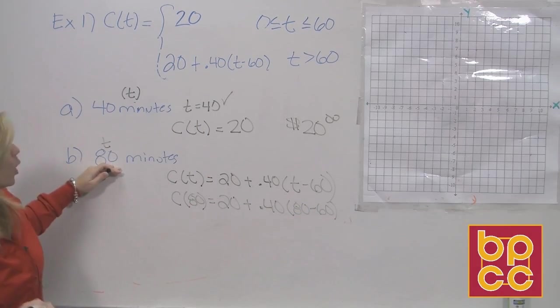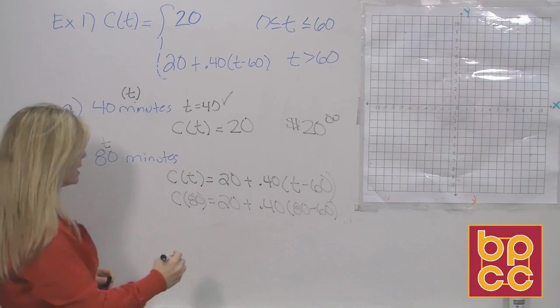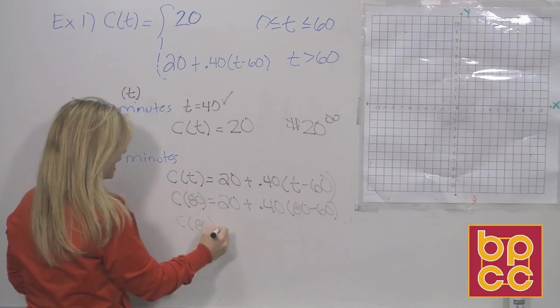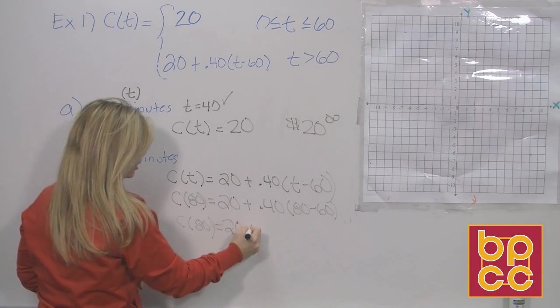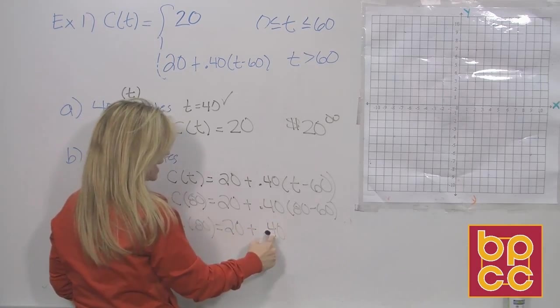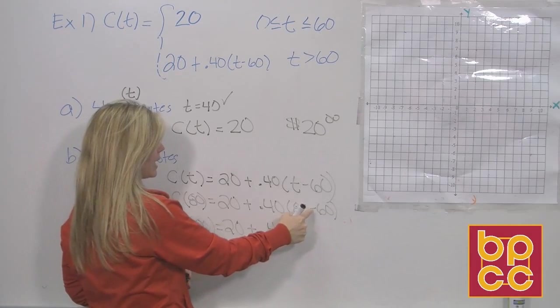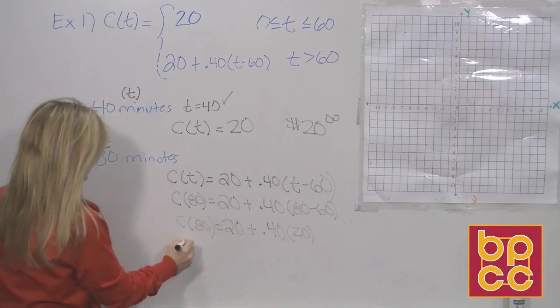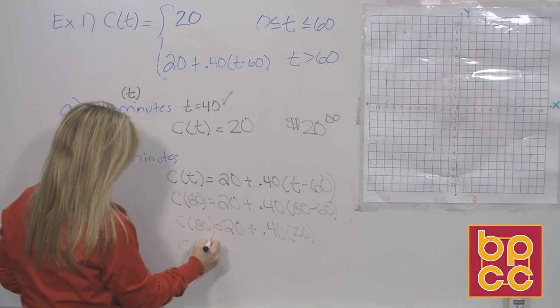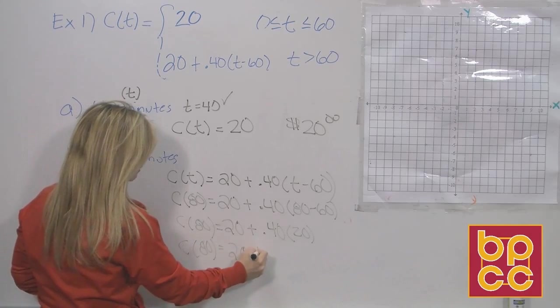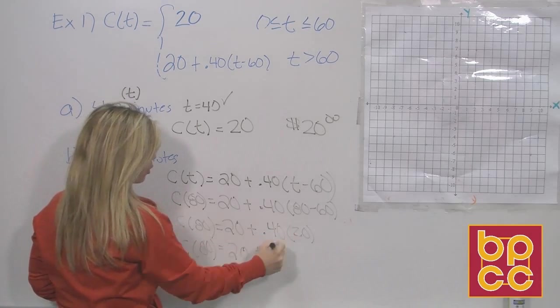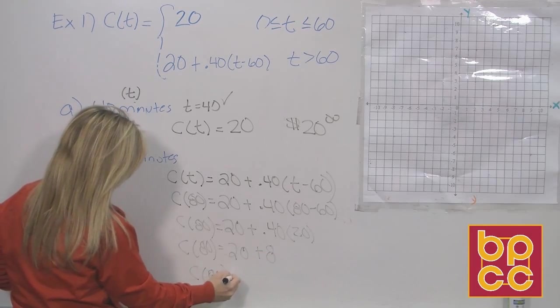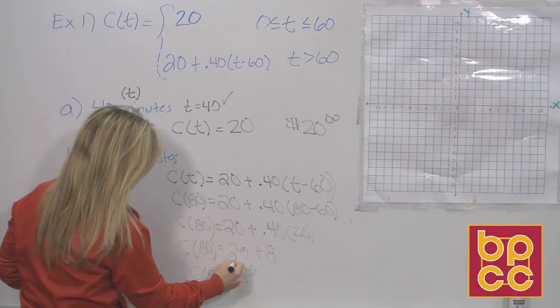If we talk 80 minutes, we're paying for 20 extra minutes. And that's what this is going to show us. Here's the flat fee of $20, plus we're going to pay 40 cents for the extra minutes. Well, the extra minutes are 80 minus 60, which is 20. And now we'll figure that out. The cost for 80 minutes would be 20 plus 40 cents for 20 minutes is $8. So if we talked 80 minutes on the phone that month, it cost us $28.